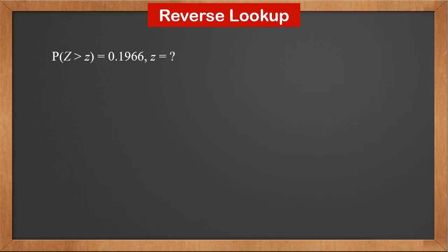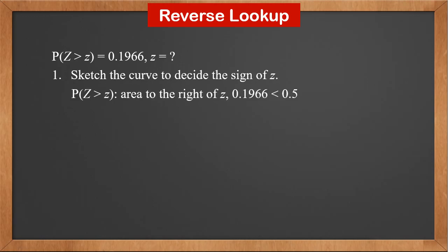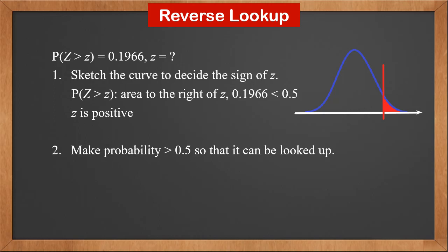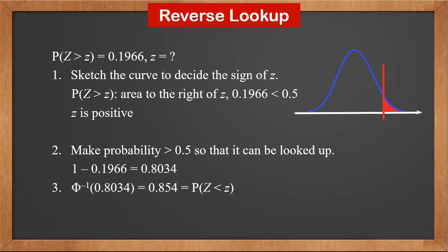First, sketch the curve to decide the sign of z. It's P(Z > z), so it's the area to the right of z. 0.1966 is less than 0.5, so the sketch is like this. Therefore, z is positive. Second, make the probability greater than 0.5 so that it can be looked up in the z table: 1 minus 0.1966 is 0.8034. Third, look it up in the z table. Inverse phi(0.8034) = 0.854. Therefore, z is 0.854.